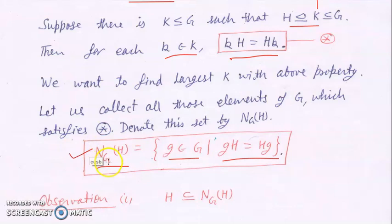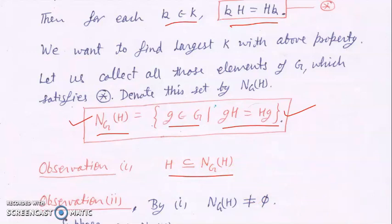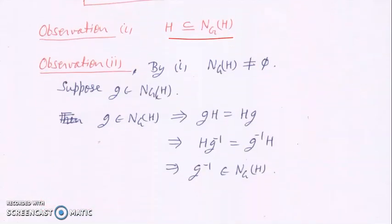We collect all elements g in G such that gH = Hg, and we call this set the normalizer of H, denoted N(H, G). Since elements of H satisfy this property, H will always be inside the normalizer of H, so the normalizer of H is non-empty. We are now going to show that this normalizer of H is a subgroup of G.